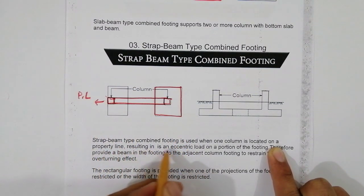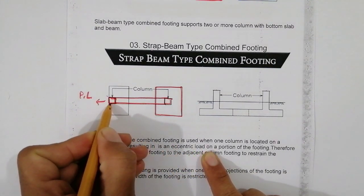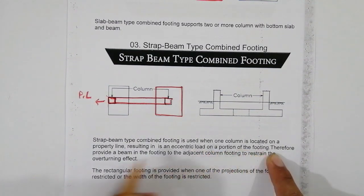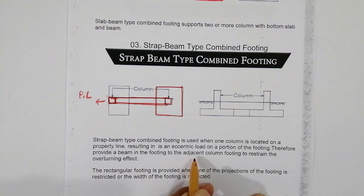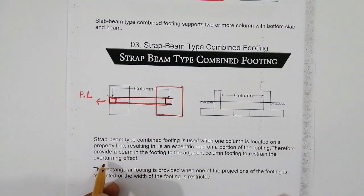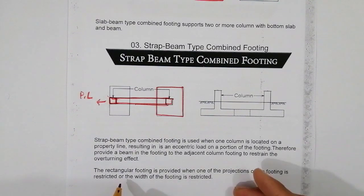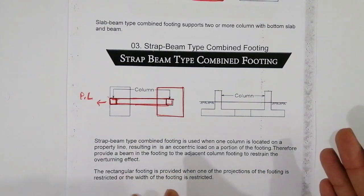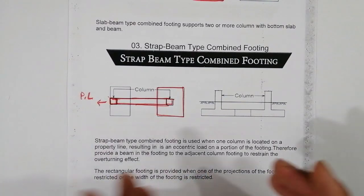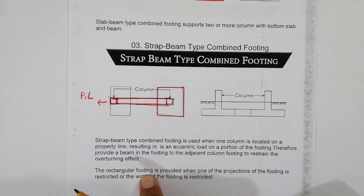Because the column at the property line results in an eccentric load, we provide a beam in the footing to connect it to the adjacent column footing and restrain the overturning effects. The rectangular footing is provided when one of the projections of the footing is restricted, or the width of the footing is restricted, so making it rectangular avoids construction problems.